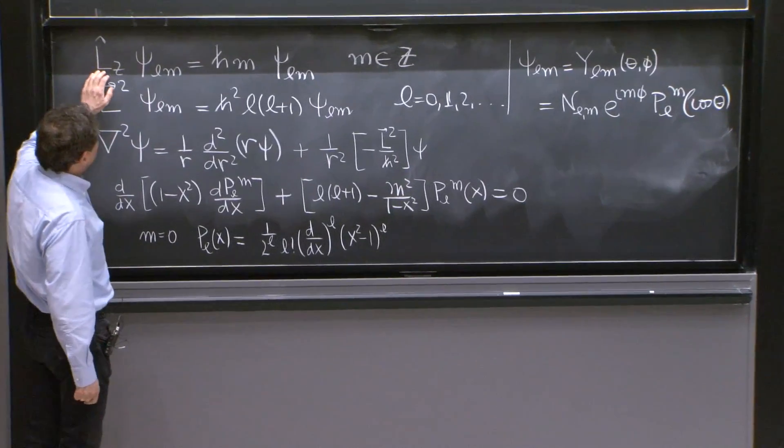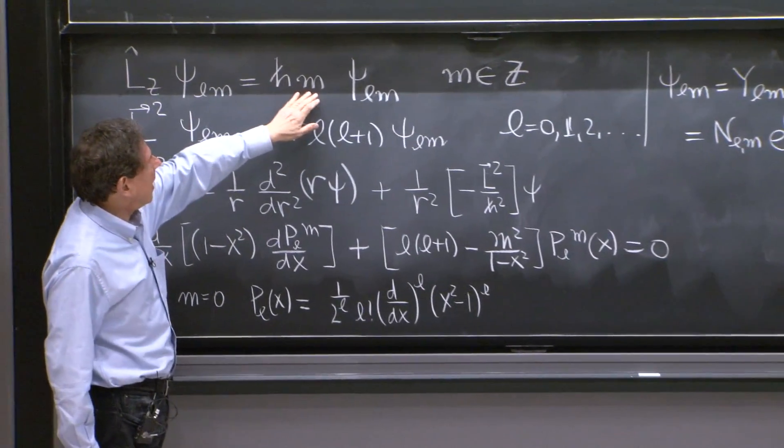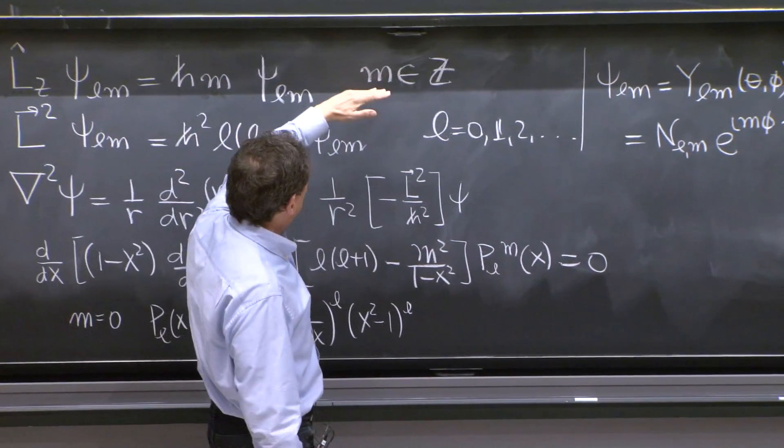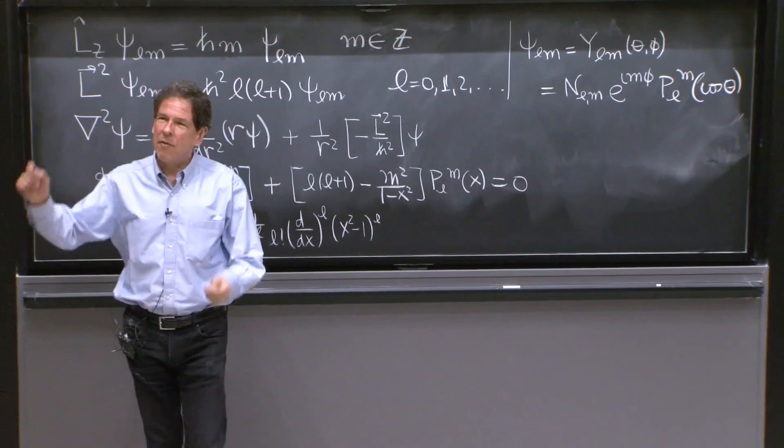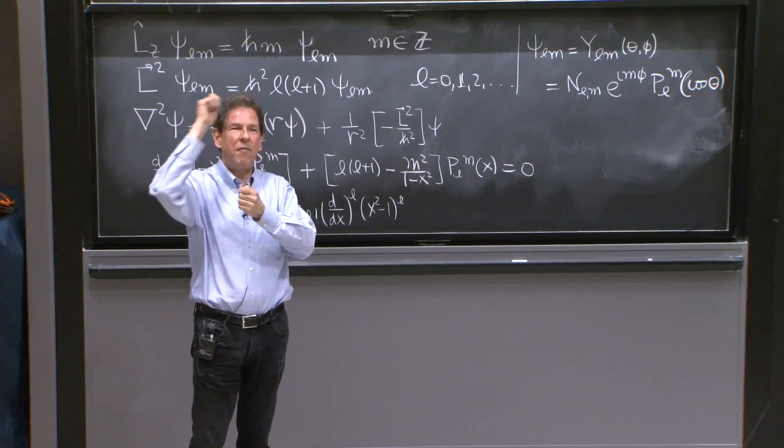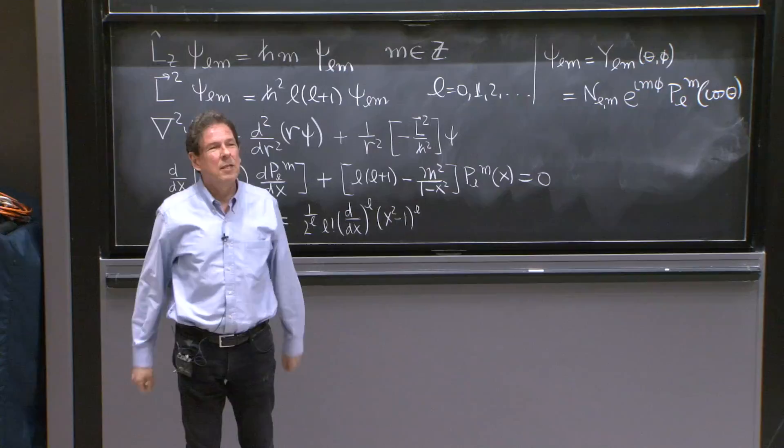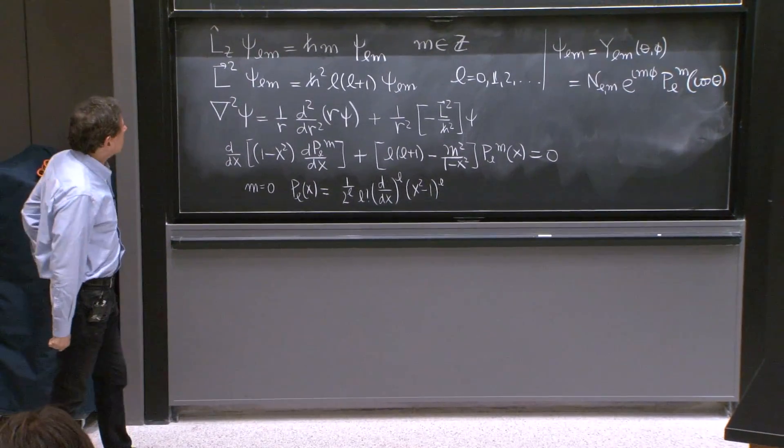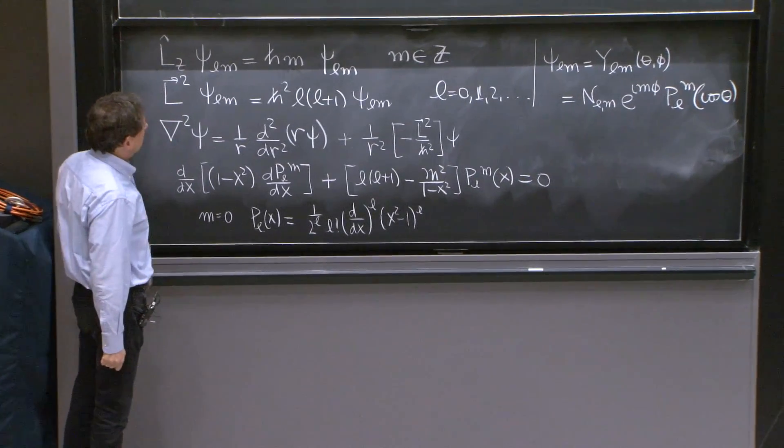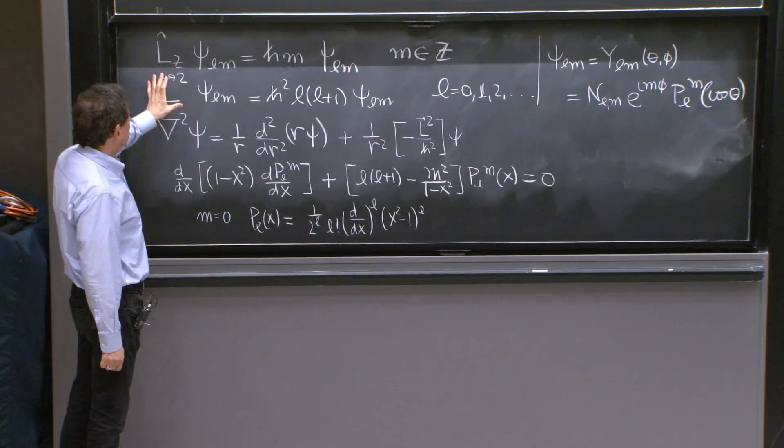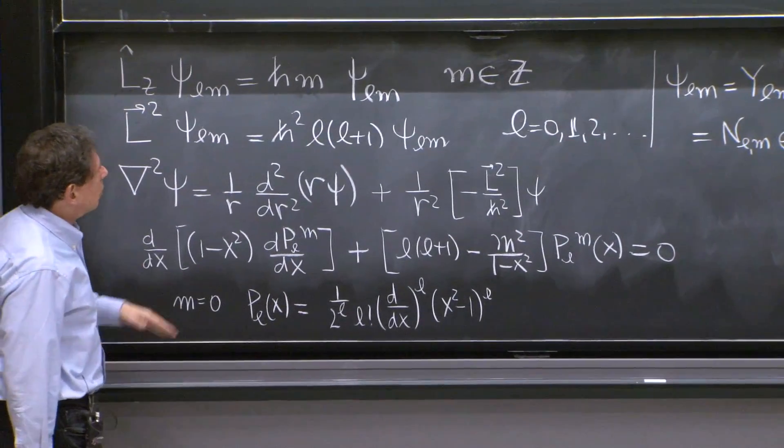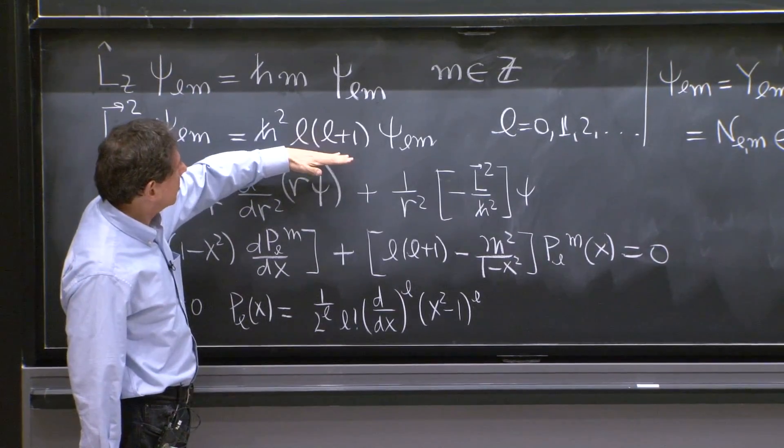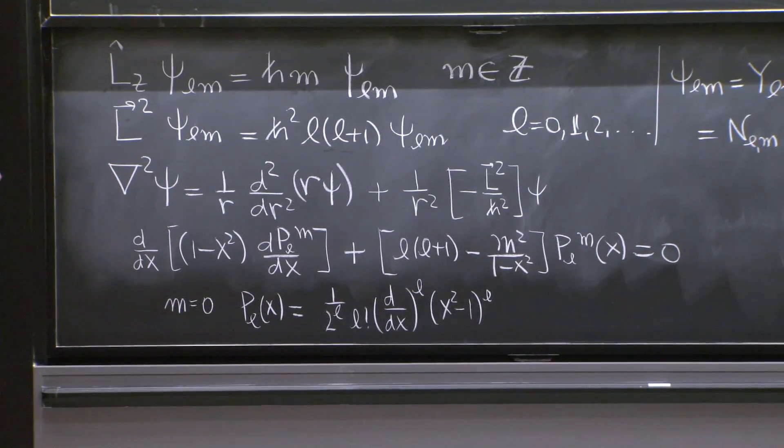Lz being proportional to angular momentum is h bar M. We figured out, by looking at this differential equation, that if we wanted single-valued wave functions, wave functions would be the same at phi and at phi plus 2 pi, which is the same point, you must choose M to be an integer. For the L squared operator, we also explained that the eigenvalue should be positive. That is achieved when L is greater or equal to zero.